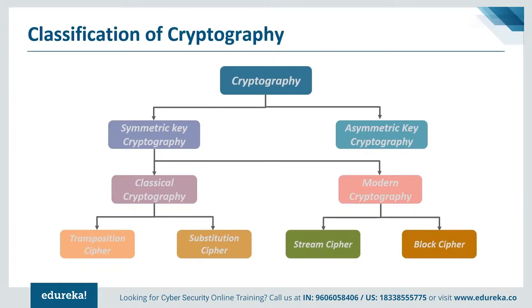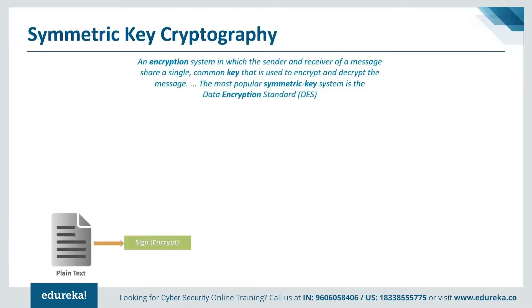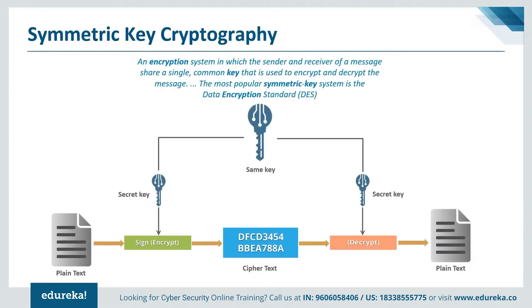Symmetric key algorithms use the same cryptographic keys for both encryption of plaintext and decryption of ciphertext. The keys may be identical or there may be a simple transformation between the two. The keys represent a shared secret between two or more parties to maintain a private information link. This requirement that both parties have access to the secret key is one of the main drawbacks of symmetric key encryption compared to asymmetric key encryption. The most popular symmetric key system is the Data Encryption Standard, also known as DES.